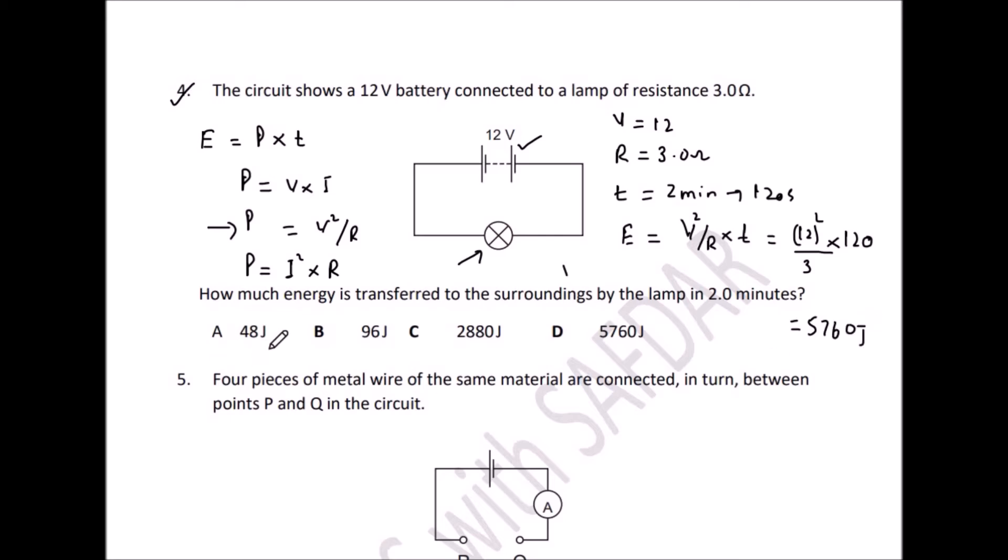Now look at the option. A is 48 J, not correct. B 96, cross this one. C 2880 J, wrong answer. And D 5760 J, that is the right option. D is the right answer here.